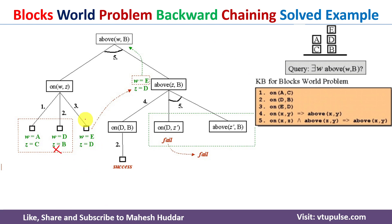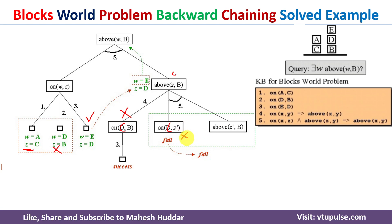We have not yet considered the first rule where z equals c, giving above(c, b). Replacing z with c, the left sub-goal becomes on(c, b) — but we have no such rule in the knowledge bases, so it is not satisfiable. Similarly, on(c, z') has no matching rule, so that branch is also not satisfiable. Therefore this entire sub-tree is not satisfiable.